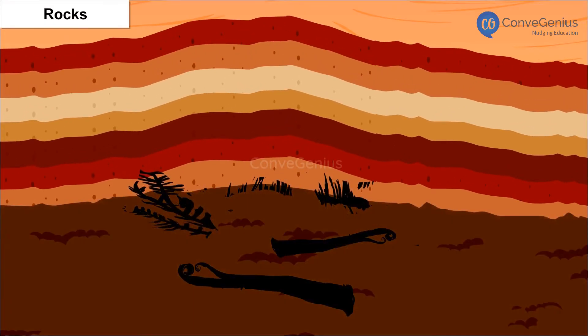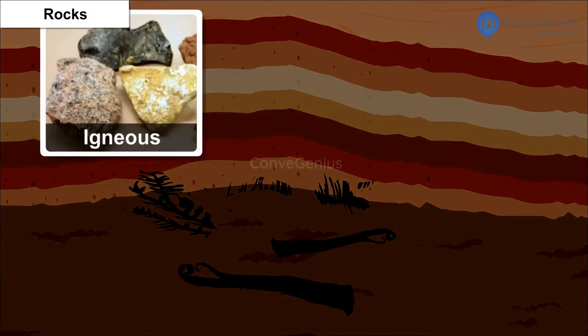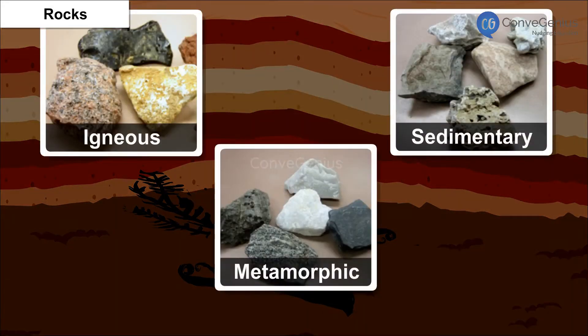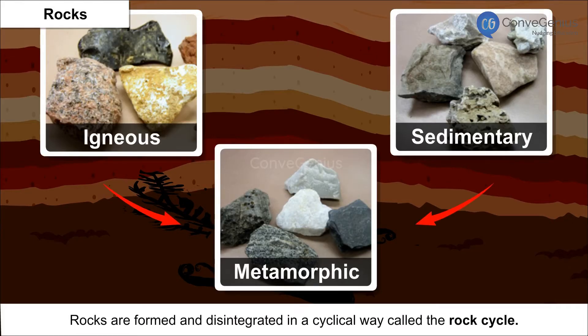The various types of rocks are igneous, sedimentary and metamorphic. Rocks are formed and disintegrated in a cyclical way called the rock cycle.